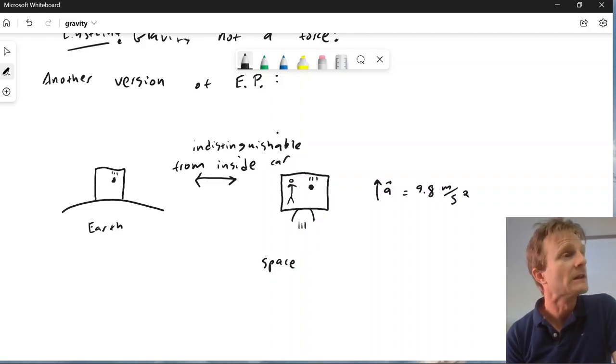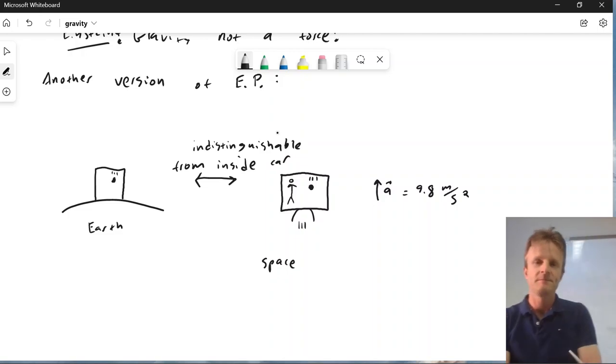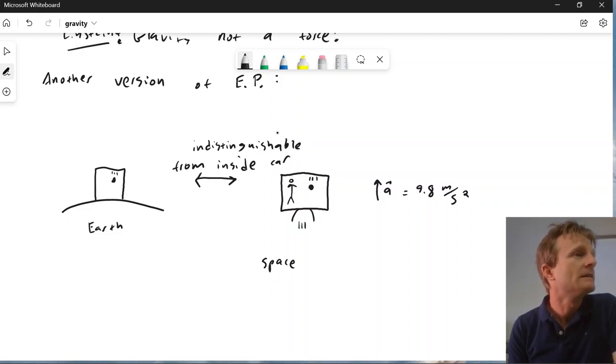But it's a version of this is what Einstein called the happiest thought of his life. Because it really led him to formulating the theory of gravity, realizing that you can't even tell if you're in a gravitational field or not.